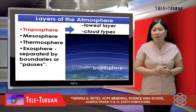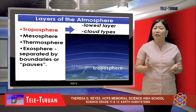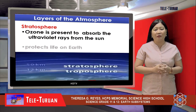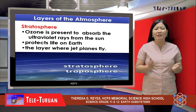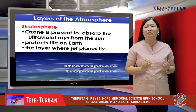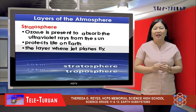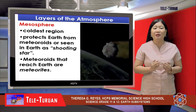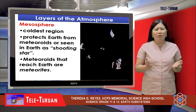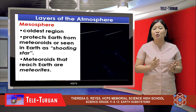The lower layer is the troposphere, where most of the water vapor is found and all weather-associated cloud types occur. The second layer is the stratosphere, where ozone is present to absorb ultraviolet rays from the sun, releasing some of this energy and protecting life on Earth. The stratosphere is also the layer where jet planes fly. The third layer is the mesosphere, which is the coldest region and protects Earth from meteoroids that enter the atmosphere. Most meteoroids burn up due to intense friction and are seen on Earth as shooting stars.